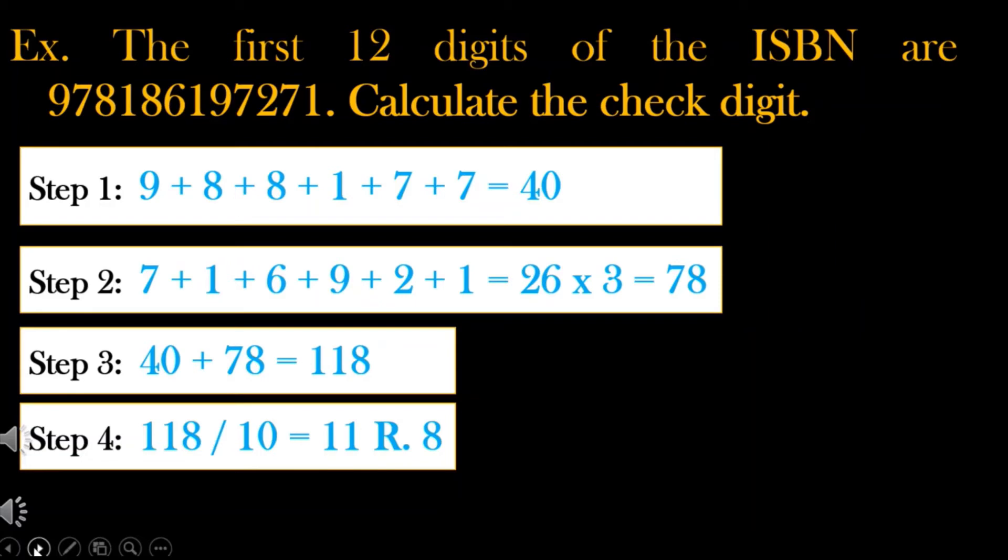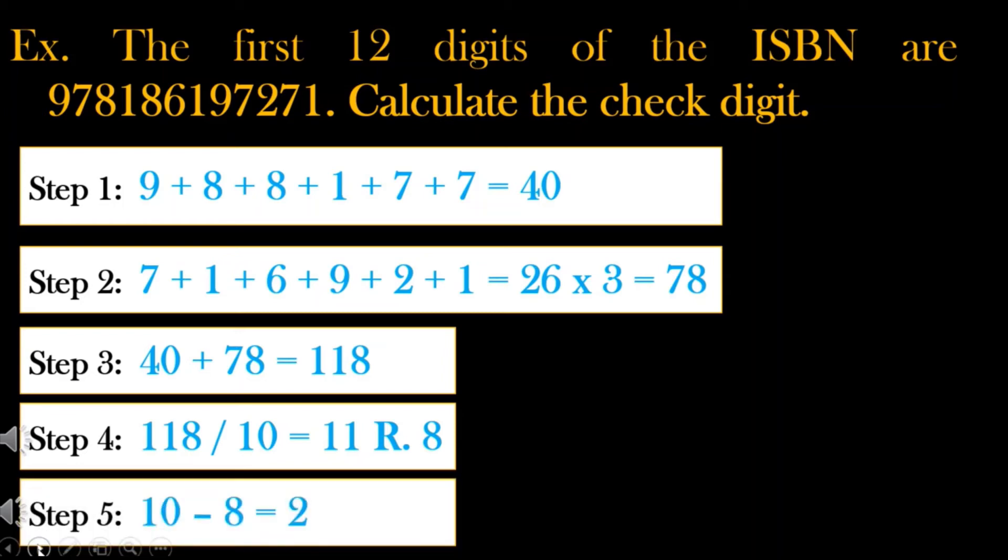Since the remainder is not 0, we subtract it from 10 to get the check digit. Subtracting 10 by 8, the result is 2. Thus, the check digit is 2.